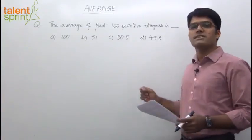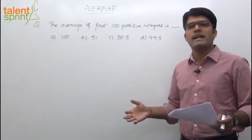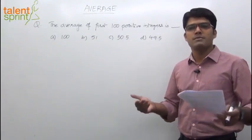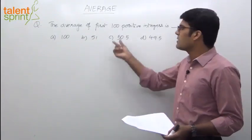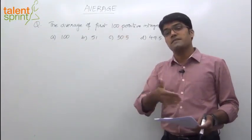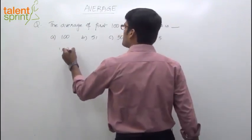The average of first 100 positive integers is dash. Now you all know that average is sum of all the values by number of values. The number of values are 100. We need to look at the first 100 positive integers. What are the first 100 positive integers?